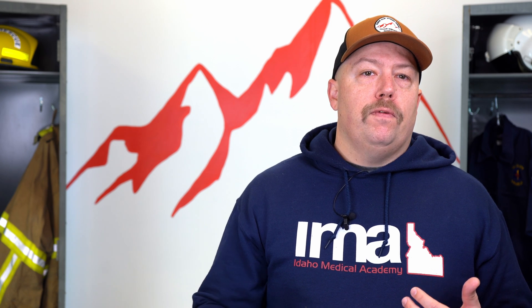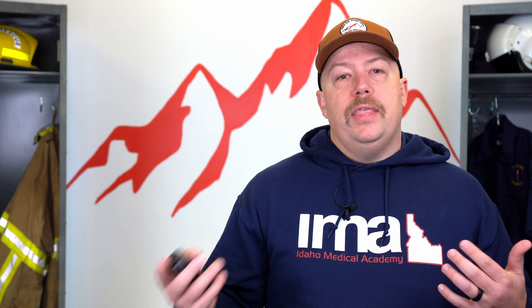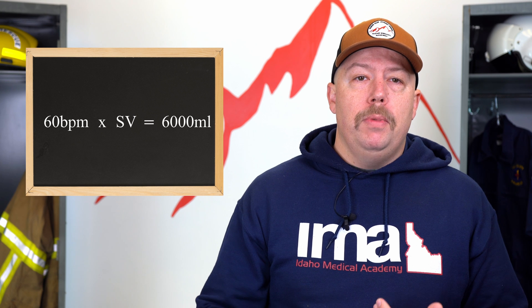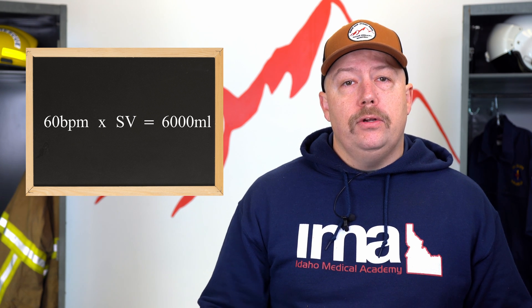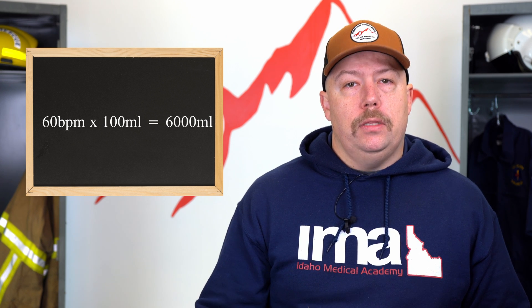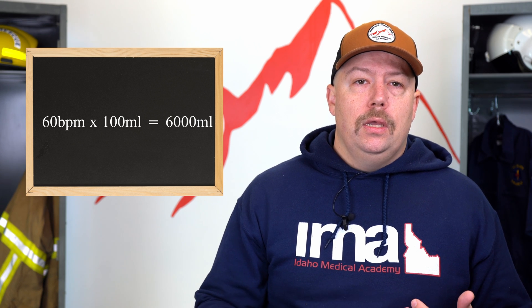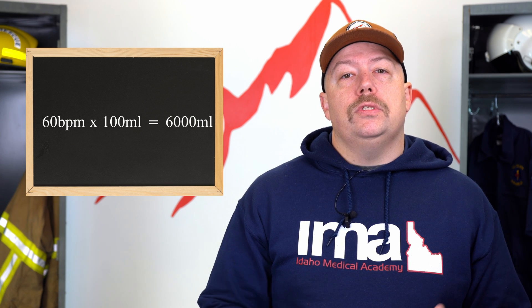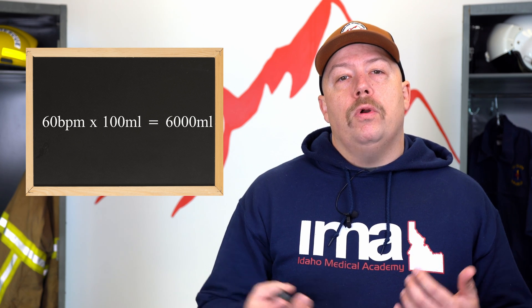For a normal adult, the average cardiac output is five to six liters — or 5,000 to 6,000 milliliters — per minute. A thousand milliliters equals one liter. For this example, let's say cardiac output is 6,000 milliliters. If that patient's resting heart rate is 60 beats per minute, then to achieve a cardiac output of 6,000 milliliters, their stroke volume needs to be 100 milliliters. So the equation is: 60 times 100 equals 6,000 — meaning 60 beats per minute with 100 milliliters per beat equals 6,000 milliliters, or 6 liters per minute.